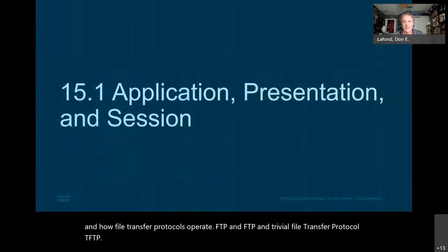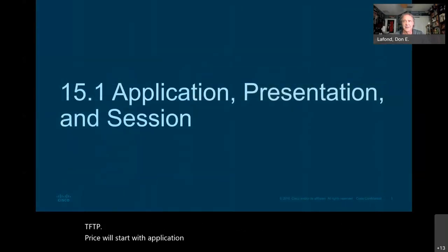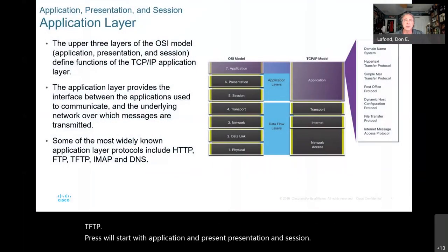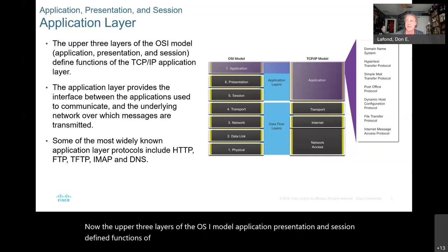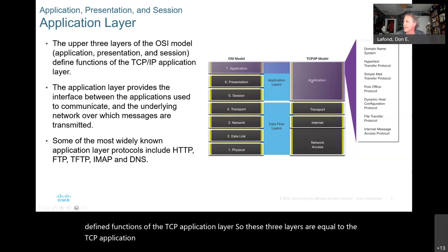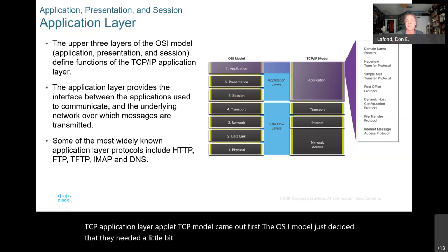First we'll start with application, presentation, and session. The upper 3 layers of the OSI model — application, presentation, and session — define functions of the TCP application layer. So these 3 layers are equal to the TCP application layer. The TCP model came out first; the OSI model just decided they needed a little bit more functional definition of what goes on, and so they split it into 3 different layers.